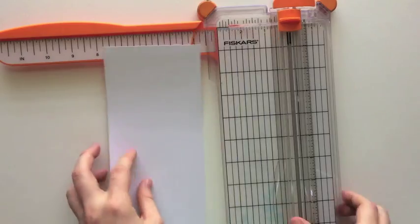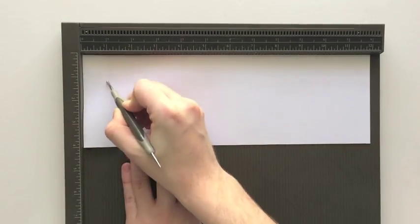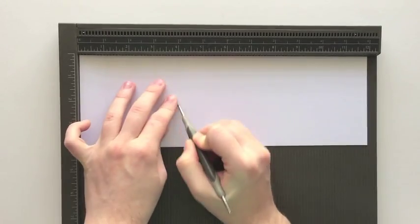So first you're going to trim off a four inch piece by twelve inches, and then you're going to score on each one inch line.